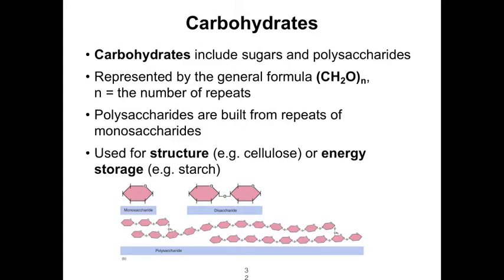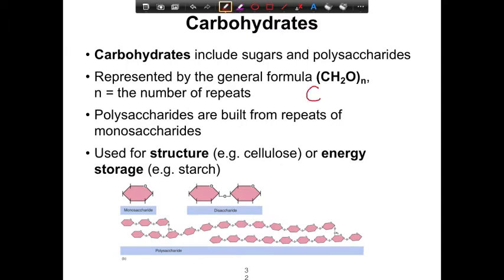We'll begin by looking at carbohydrates. Carbohydrates include sugars and polysaccharides. Sugars can be the monomers of polysaccharides, meaning many saccharides linked together. They're represented by the formula CH₂O to the nth, meaning n is the number of repeats. The sugar fitting this formula that you're most familiar with is C₆H₁₂O₆. Polysaccharides are built from repeating monosaccharide monomers.